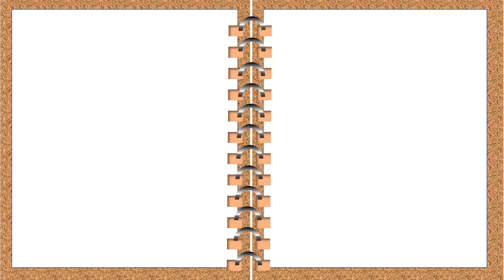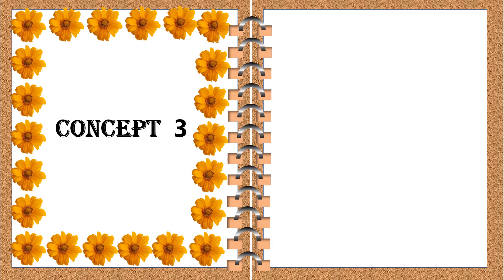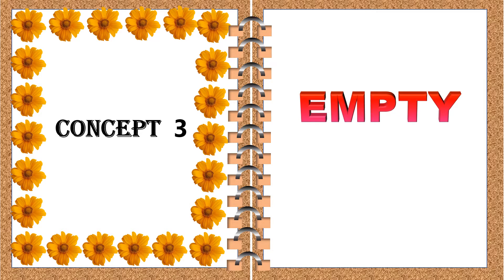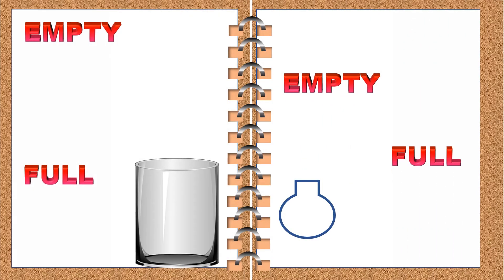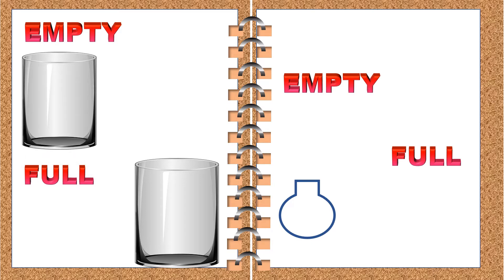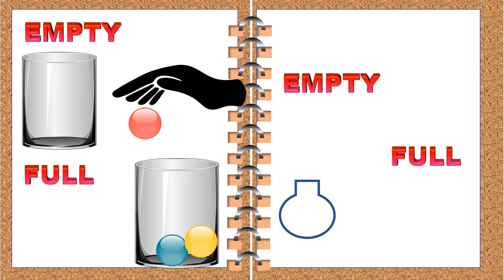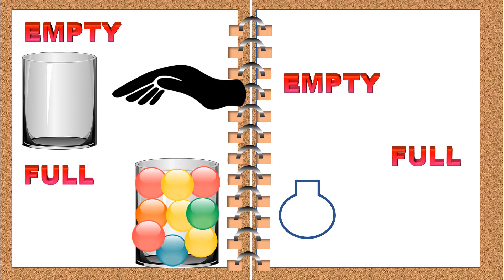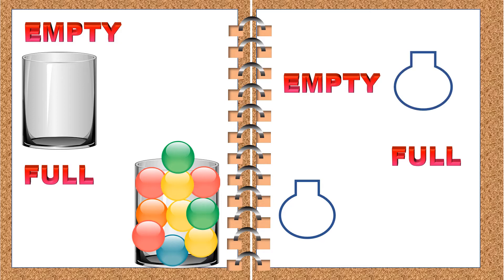Let's move on to our next concept, which is empty and full. This book is going to practically show us what is empty and what is full. This glass is empty — it has nothing in it. Now let's fill it with the balls. Now this glass is full of balls. This jar is empty. Now let's fill it with the juice. Now this jar is full. So when we say full, it has no more space to take objects in it.